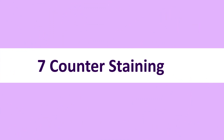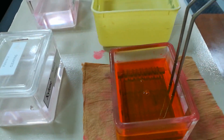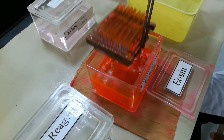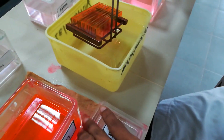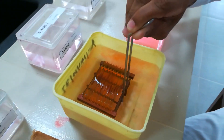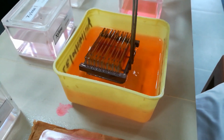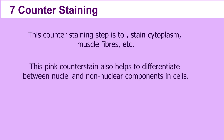Then wash in the water for three minutes. Next, perform the counter staining by dipping the slide in one percent Eosin for five minutes. After that, wash in running tap water. The counter staining step is to stain cytoplasm, muscle fibers, etc. The pink counter stain also helps to differentiate between nuclei and non-nuclear components in cells.